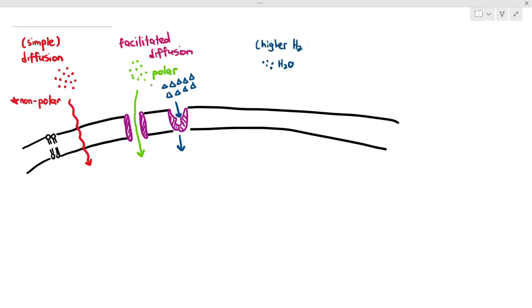Water crosses the cell membrane from an area of less negative water potential, or higher water potential, to a more negative water potential, or lower water potential, across a partially permeable membrane. This process is known as osmosis.